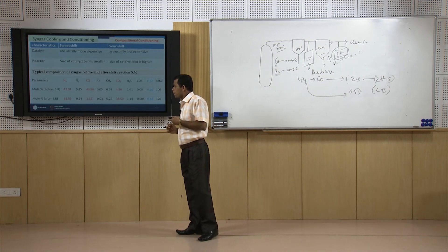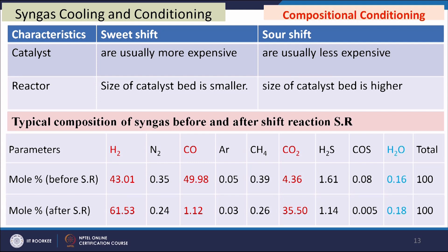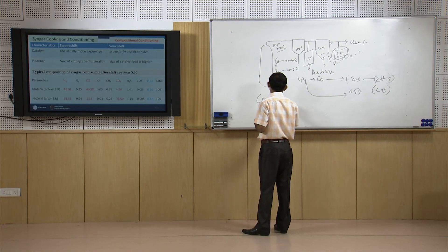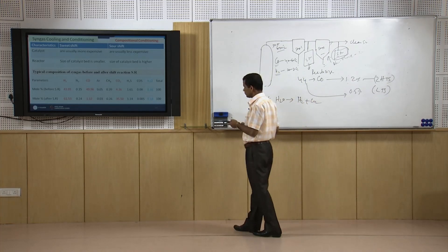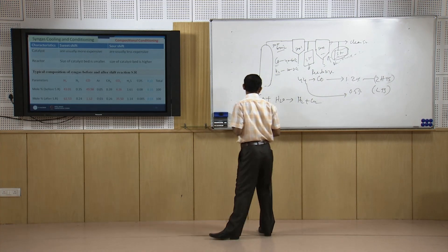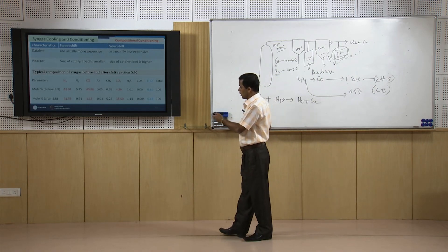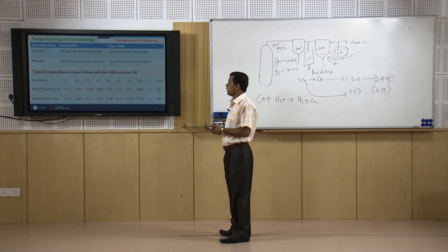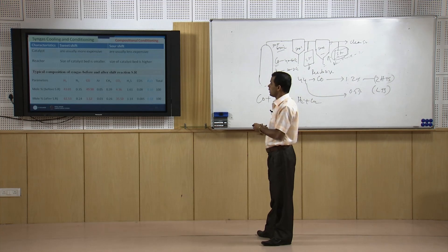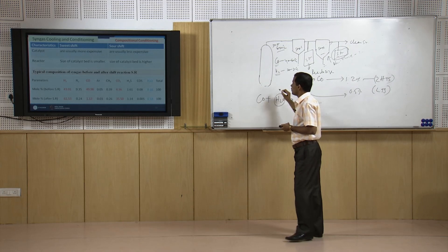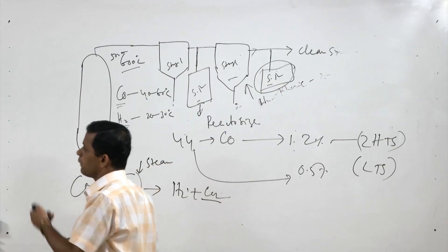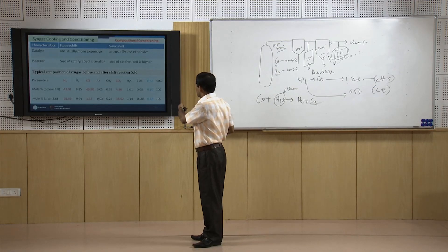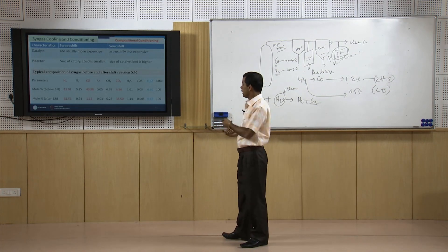A typical example shows how syngas quality changes after shift reactions. The basic reaction is CO + H2O → H2 + CO2. Hydrogen increases from 43.01 to 61.53 percent and CO reduces from 49.98 to 1.18 percent, while CO2 increases. The H2O value does not change much in the analysis because when syngas is taken for analysis, temperature reduces and H2O condenses.